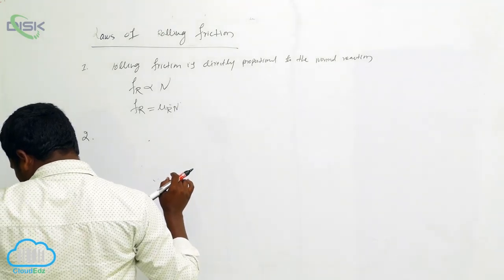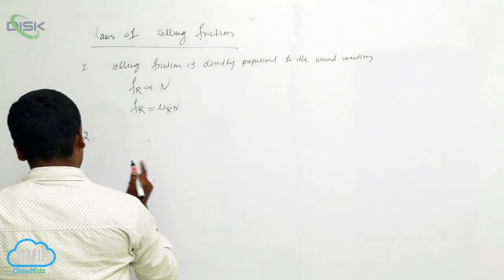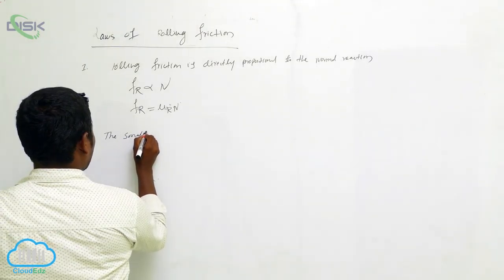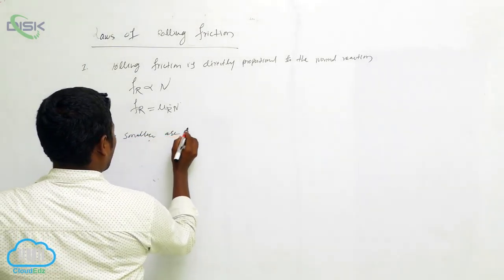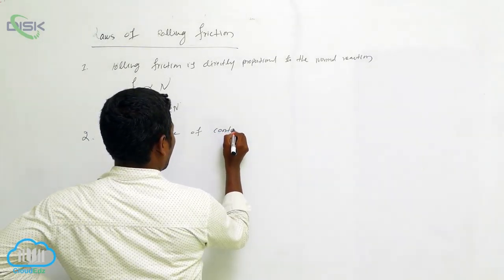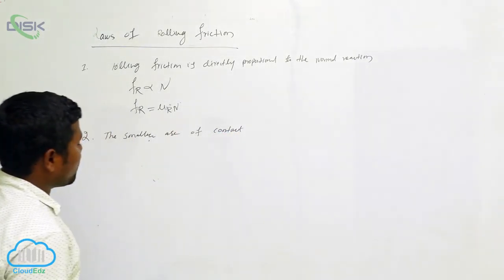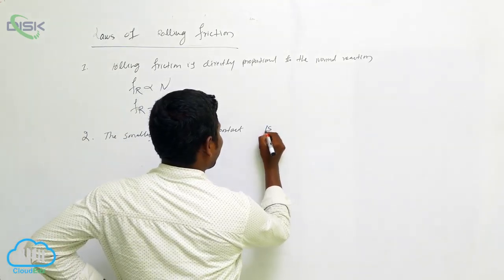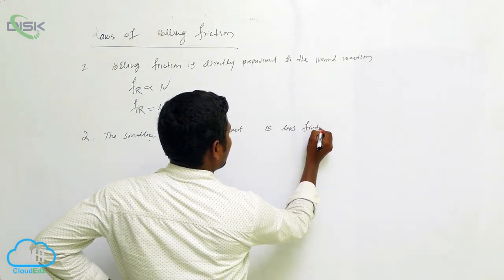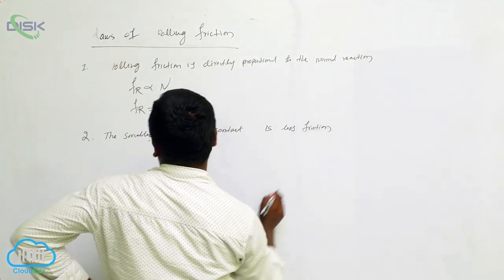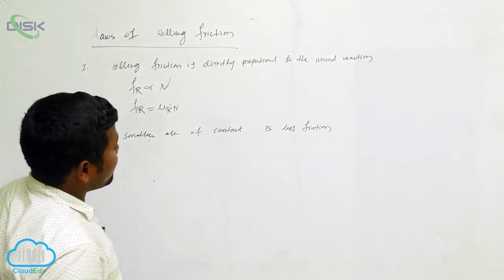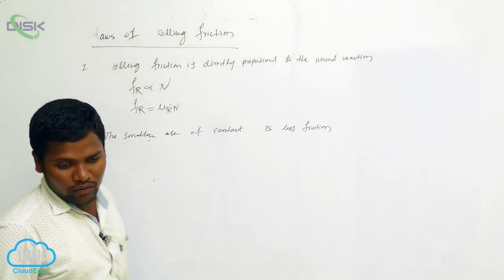The second law: the smaller the area of contact, the less the rolling friction. Smaller area of contact means less friction.